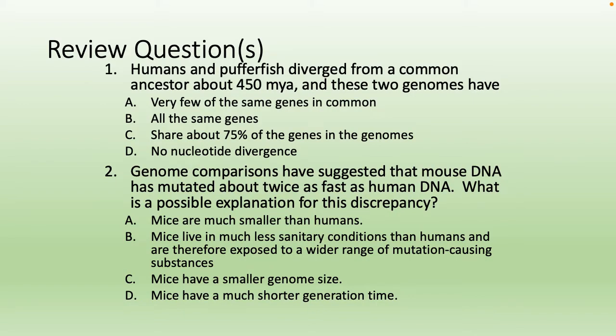Review questions: Humans and pufferfish diverged from a common ancestor about 450 million years ago — these two genomes share about 75% of the genes. Genome comparisons have suggested that mouse DNA has mutated about twice as fast as human DNA — a possible explanation is that mice have a shorter generation time.